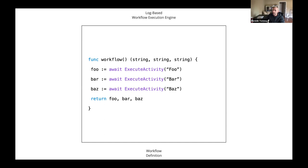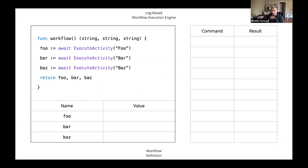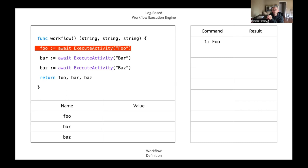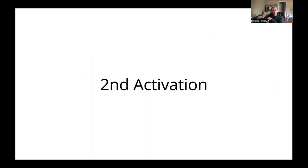When we invoke a workflow definition, our system instantiates it into a workflow execution. In the first activation, stepping through the code we hit the first statement: await execute activity foo. That results in a command foo and we await on that await point. Since we do not have a result yet, we yield control back to the workflow engine with the request to execute activity foo. Temporal terminates that particular workflow function execution, orchestrates the execution of activity foo, and yields a return value a — leading to our second activation.